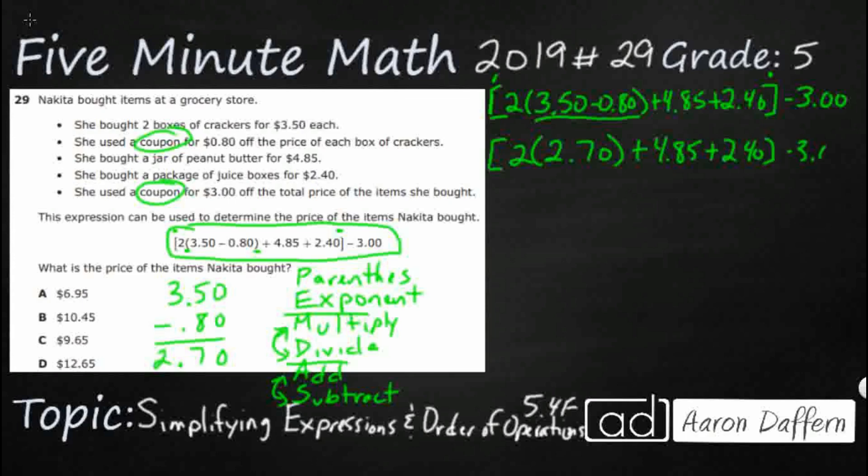All right, we're still within this bracket. This parentheses now simply means multiplication. When you see a number next to parentheses, it simply means multiply. So we don't always have to write that X. So that means we're going to multiply 2 times 2.70. So let's just go ahead and double that. That's going to be 5.40. And I'll take it out of the parentheses.